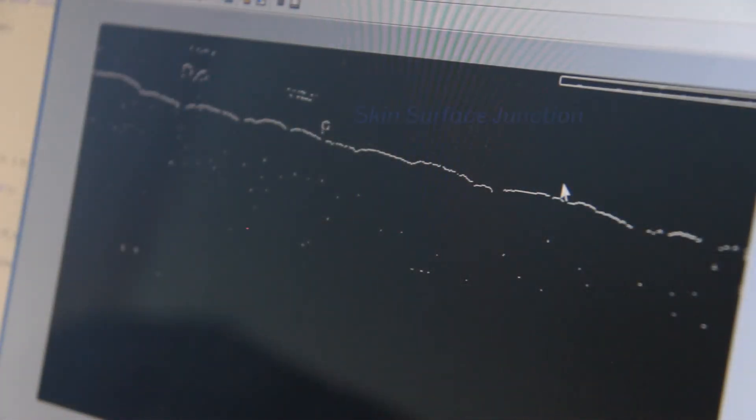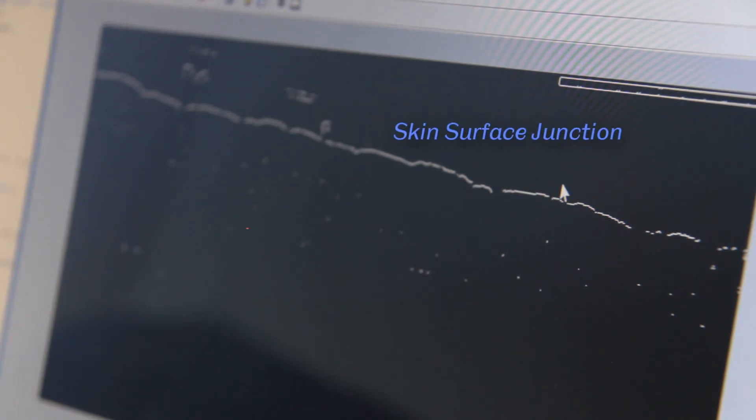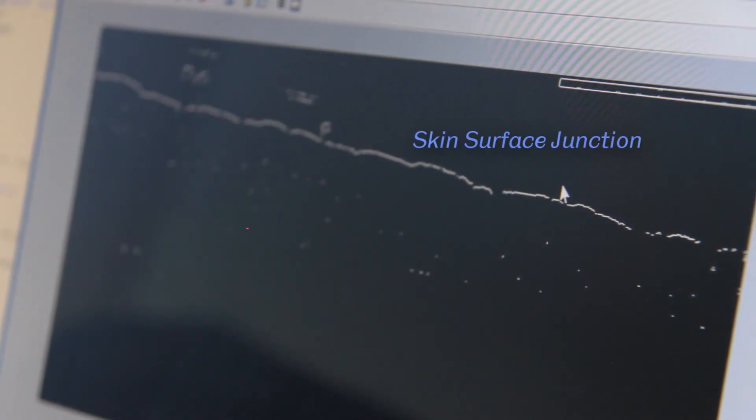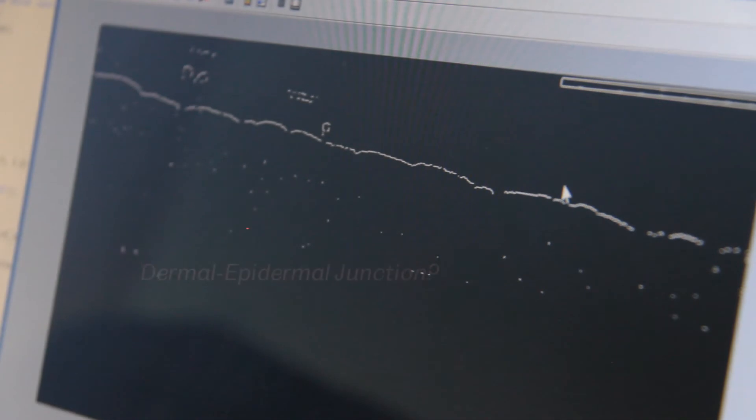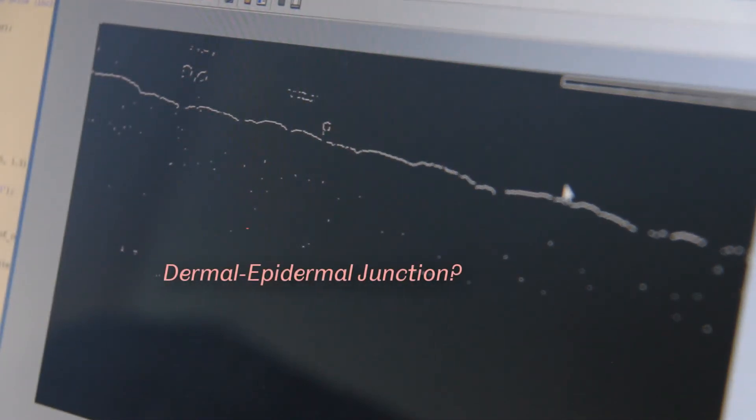The outcomes that we've seen from developing this algorithm have been that the skin surface junction is very easily identifiable by the computer and quite reliably so, but despite the image preprocessing steps to get rid of some of the artifacts in the image.